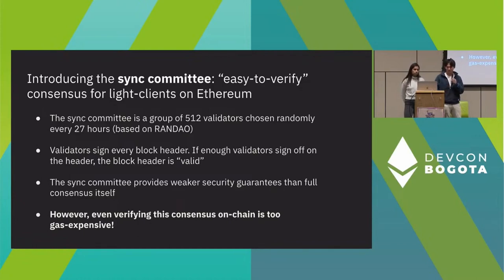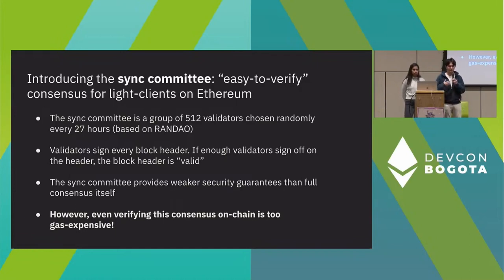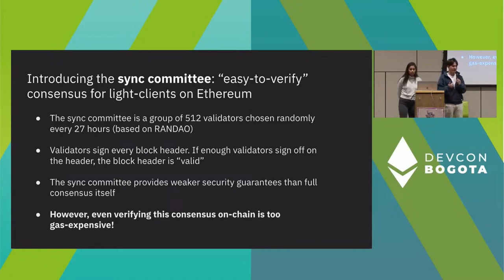This is why the consensus folks essentially implemented a specific consensus algorithm for light clients, known as the sync committee. Instead of verifying consensus against 400,000 validators, the sync committee reduces this problem down to listening to the signatures of 512 validators, which are randomly chosen every 27 hours. These validators sign every block, and if enough validators sign a block, the block is justified, and after some finalization rules it's also considered finalized. At the cost of being much cheaper to verify, the sync committee provides much weaker security guarantees and requires a two-thirds honesty assumption. However, we originally explored verifying this light client protocol on-chain, and found that even with only 512 validators, actually verifying this consensus on-chain is still too expensive.